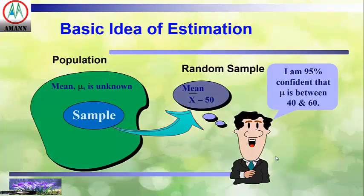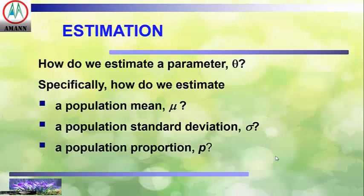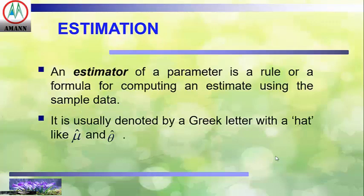This is the basic area of estimation. When estimating, we should know something about the population to be generalized. One of the characteristics of the population that researchers often want to estimate is the mean. The population mean is often the parameter to be estimated. Specifically, how do we estimate a population mean mu, a population standard deviation sigma, and a population proportion p? An estimator of a parameter is a rule or formula for computing an estimate using the sample data.